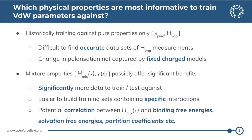One of the big potential benefits — and this is mainly a hypothesis at the moment — is that improving performance on mixture properties, especially enthalpy of mixing, may correlate with also improving our performance at predicting things like binding free energies, solvation free energies, and partition coefficients, which rely on many different interactions between components that enthalpy of mixing will inform us about.